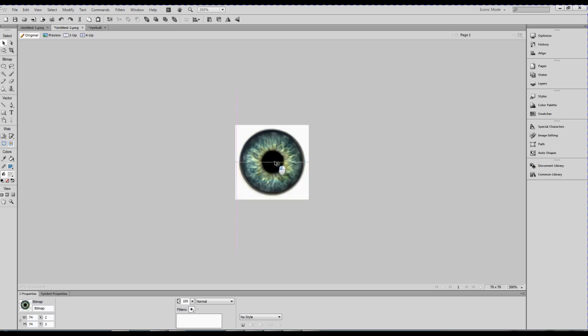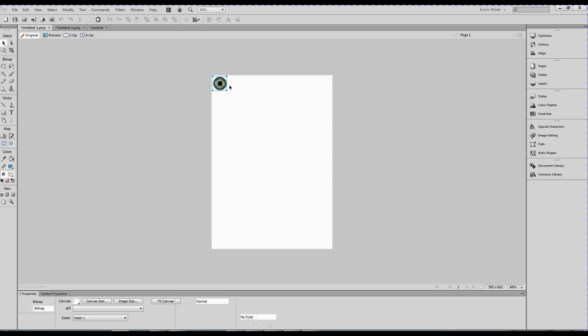Then I pasted it into this document. All I'm using this little document for is just a reference to get the eyeball the right size that I want it on the paper. And then I just copied it out over there, pasted it in there, and paste a few more in as well. Ready to print.